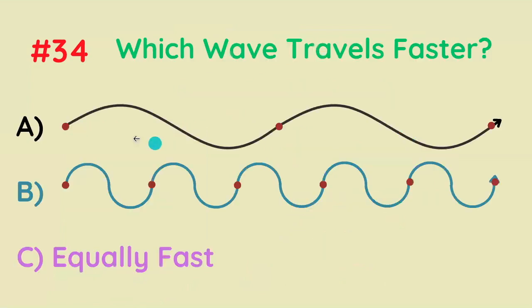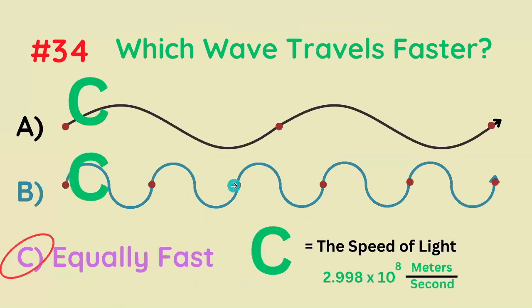Which wave travels faster — this wave or this wave? That's a trick question, because regardless of the wavelength, all light travels the same in a vacuum: 2.998 times 10 to the 8 meters per second.